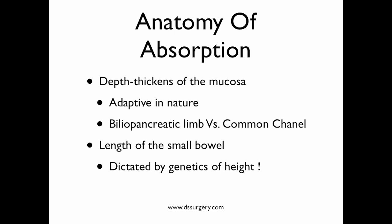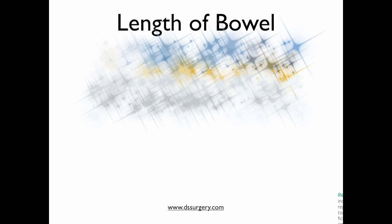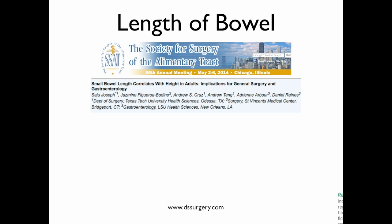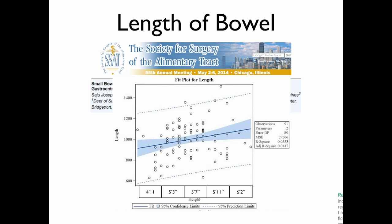Another variable in absorption is the length of the small bowel. Evidence shows that the length of the small bowel is dictated by the genetics of height, not weight. A recently presented paper — an oral presentation published from Chicago — correlates patient height with small bowel length. Taller patients have more small bowel. There is clearly broad variation, and interestingly, even though the mathematical expression is a linear line, shorter patients tend to have shorter small bowels.